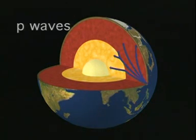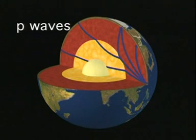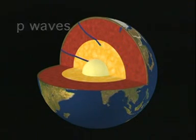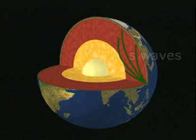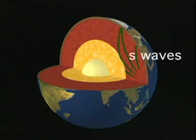There are two kinds of body waves. P waves or primary waves, followed by S waves or secondary waves, which travel more slowly.